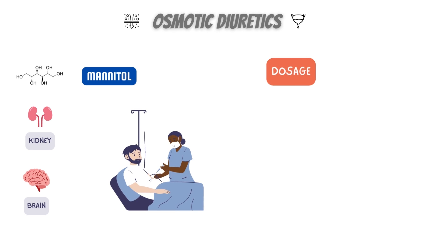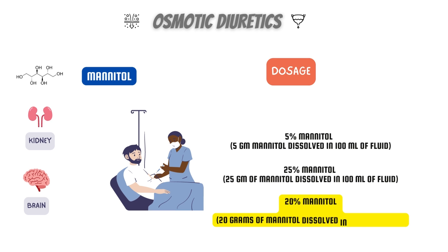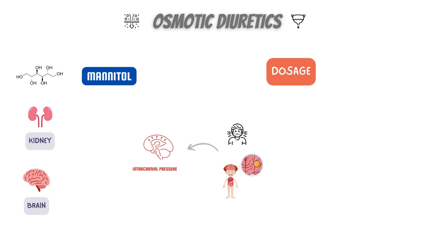When using manitol for medical purposes, it is given intravenously. Manitol can be found in varying concentrations: 5% manitol, that is 5 grams of manitol dissolved in 100 milliliters of fluid; 25% manitol, that is 25 grams of manitol dissolved in 100 milliliters of fluid. A commonly encountered solution is 20% manitol — 20 grams of manitol dissolved in 100 milliliters of fluid. For increased intracranial pressure, dosages typically range from 0.25 gram per kilogram to 2 gram per kilogram administered intravenously over 30 to 60 minutes, with effect within 5 to 10 minutes and lasting up to approximately 6 hours.